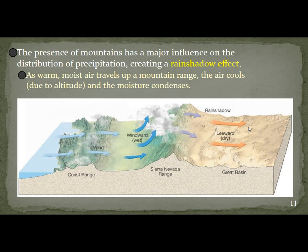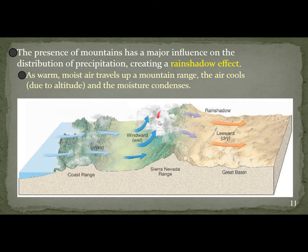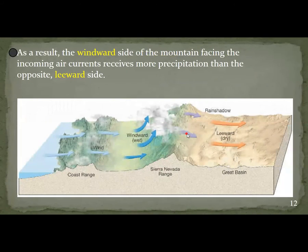The presence of mountains also has a major influence on the distribution of precipitation, creating what we call a rain shadow effect. As warm, moist air travels up a mountain range, the air cools due to altitude and moisture condenses — this is how we form clouds. On the windward side, wind coming off the ocean gets pushed up the mountains, cools and condenses. As it comes back down the other side, it has lost all of its moisture. So the windward side gets more precipitation than the leeward side.